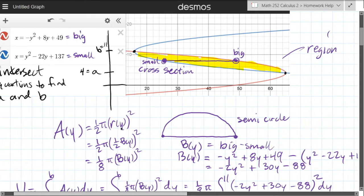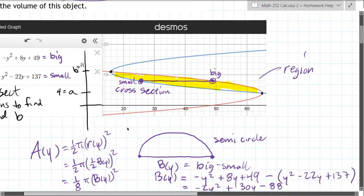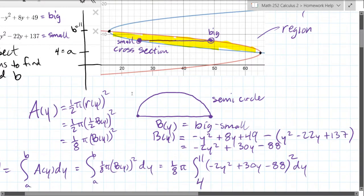This is gonna be big minus small. This is where Desmos came in handy. Big is the red function, which is the top, the negative y squared function. Small is the blue, the positive y squared function. So I just subtracted big minus small over here, and simplified that down.